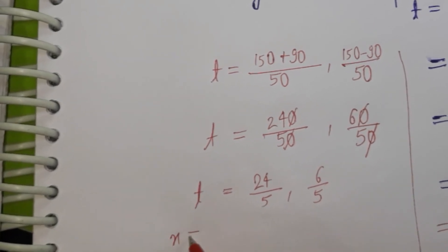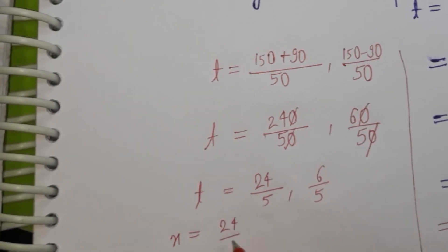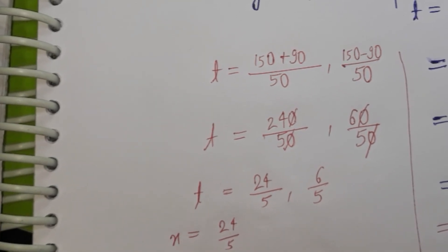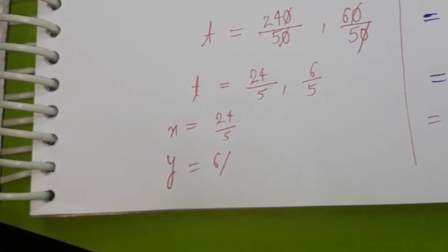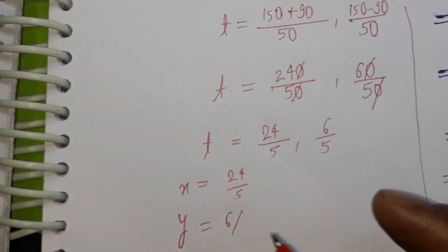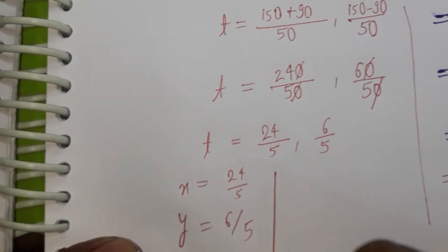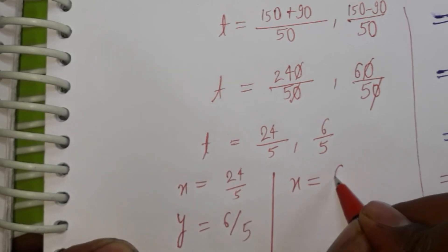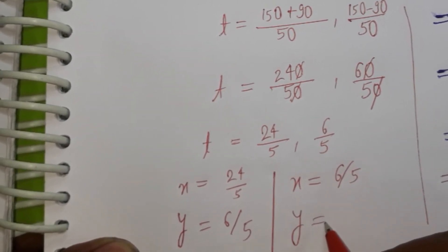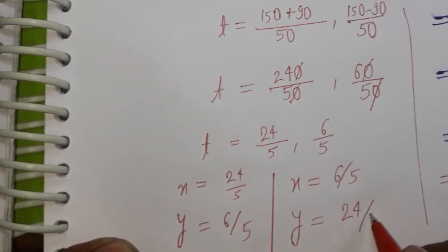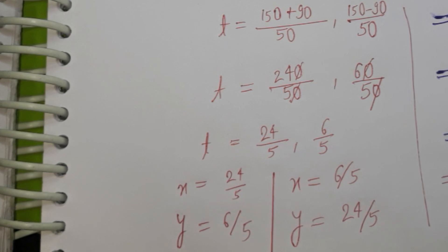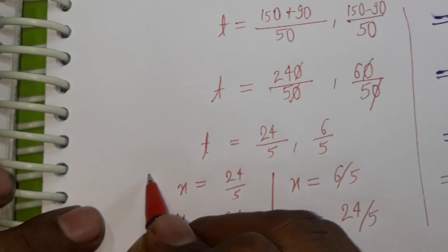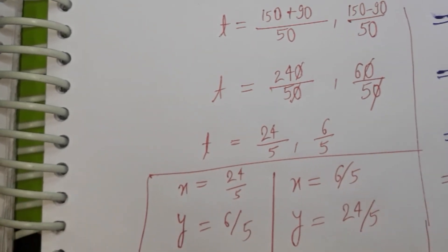So we can say x = 24/5 and y = 6/5, or alternatively x = 6/5 and y = 24/5. These two pairs are the possible solutions for x and y.